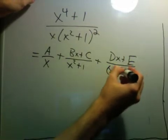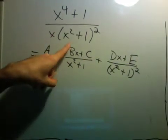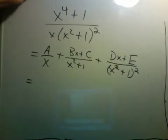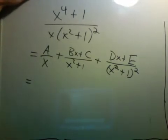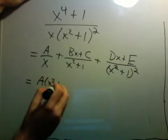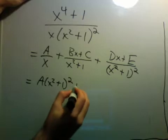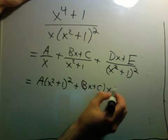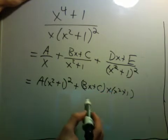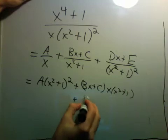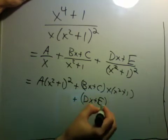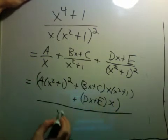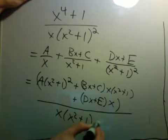So this follows a similar pattern to the case where we had a double linear factor. Now we get a common denominator and add all this together. I get this plus Bx plus C times x, x squared plus 1, plus Dx plus E times x.